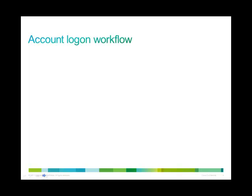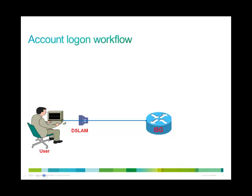Now let's see what happens when an ISG user tries to log on to the network to access an available service. The user types the address of the service in the address bar of the browser. This information is passed on to the ISG through the Digital Subscriber Line Access Multiplexer, or DSLAM. The DSLAM is connected to a group of routers that form the L2-L3 access network.